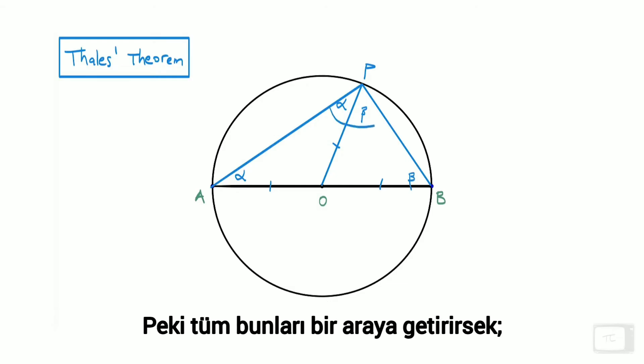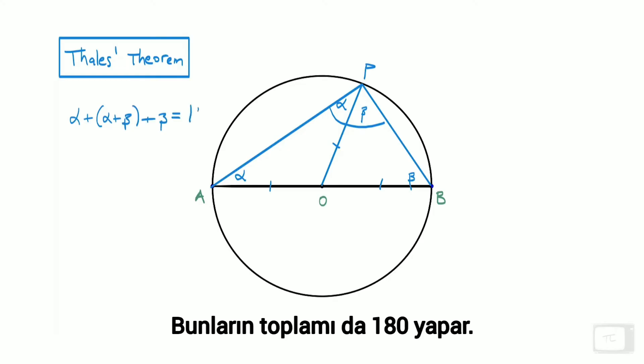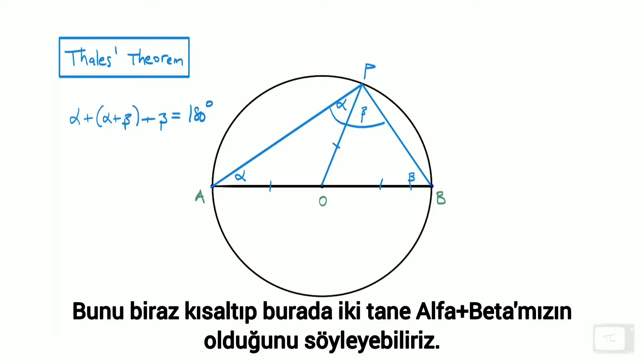If we put all of that together, what do we have? A triangle with angles alpha plus alpha plus beta plus beta, which sum to 180 degrees. We can clean that up: 2 times (alpha plus beta) equals 180 degrees.